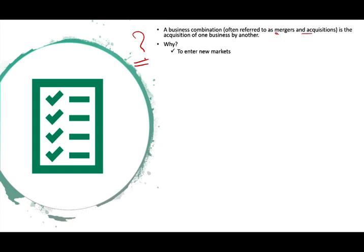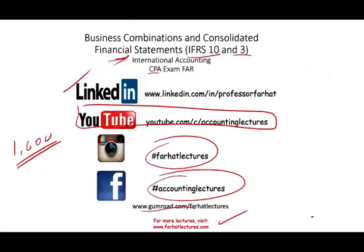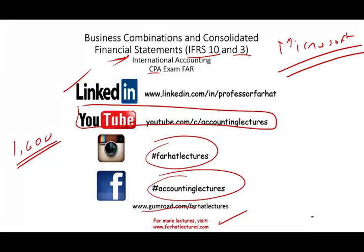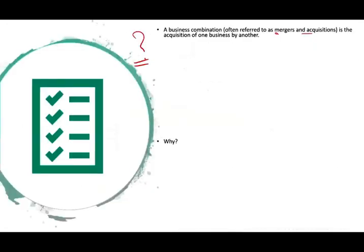For example, to enter a new market. Microsoft wanted to enter the social media world. One way to do it is to create their own social media, but they didn't do so. What they did is they bought LinkedIn. So now LinkedIn is owned by Microsoft — this is basically a business combination. You want to go into a new market and you don't want to start your own company, so you buy an existing company.